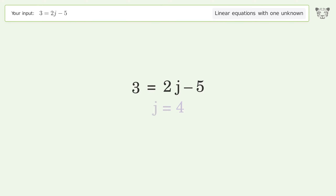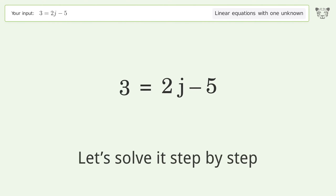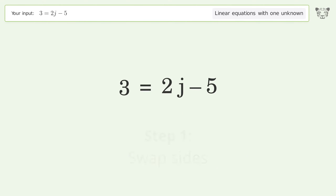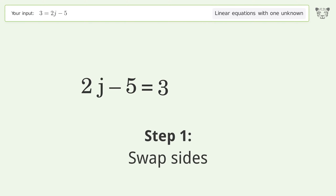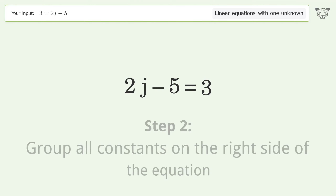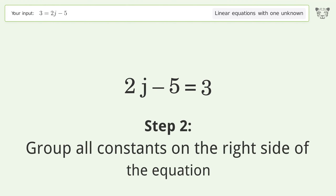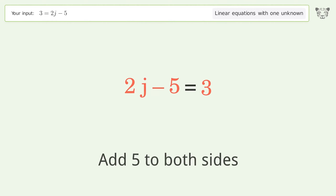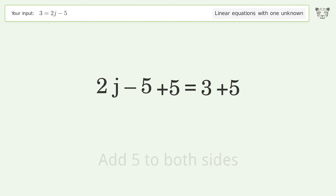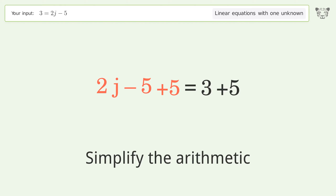Let's solve it step by step. Swap sides and group all constants on the right side of the equation. Add 5 to both sides, then simplify the arithmetic.